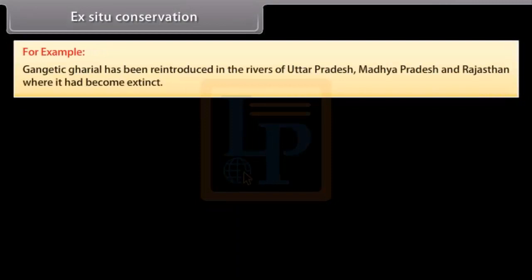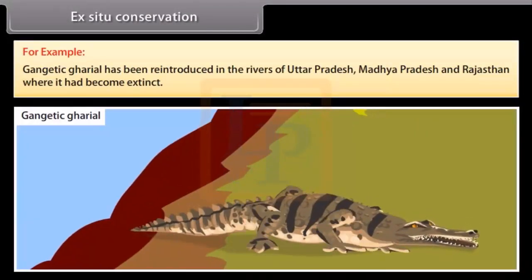For example, Gangetic Gharyal has been reintroduced in the rivers of Uttar Pradesh, Madhya Pradesh and Rajasthan where it had become extinct.